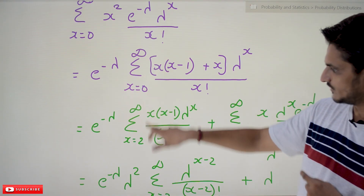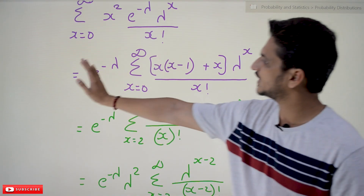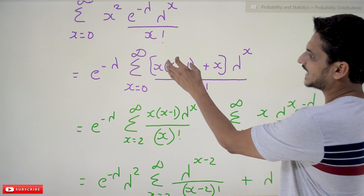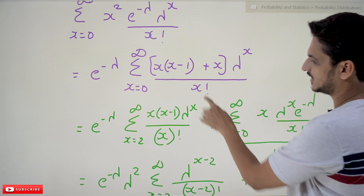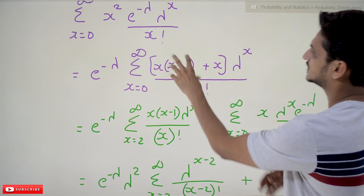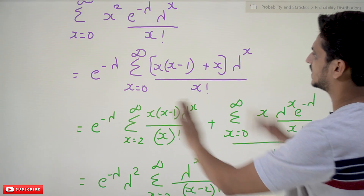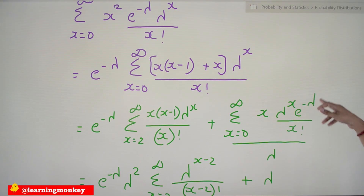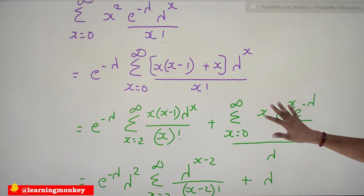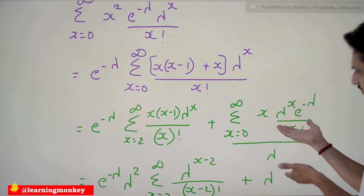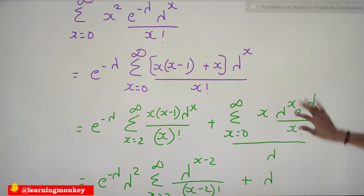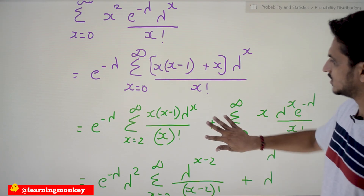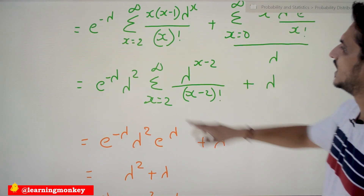So we have e^(−λ) · Σ (x=2 to ∞) x(x−1) · λ^x / x! plus the second part Σ (x=0 to ∞) x · e^(−λ) · λ^x / x!. This second part is exactly the formula for the mean of Poisson's distribution, which equals λ. So in place of the second sum we substitute λ.